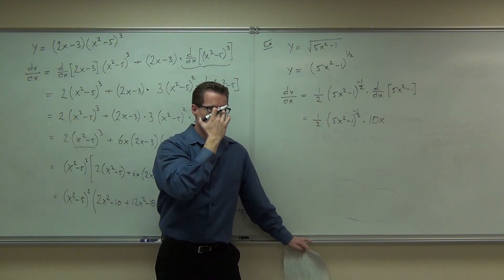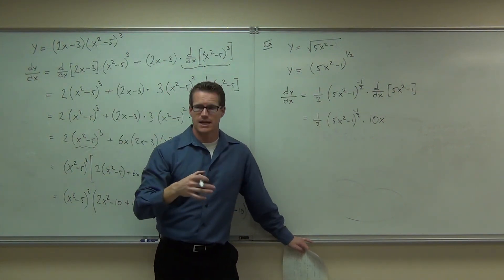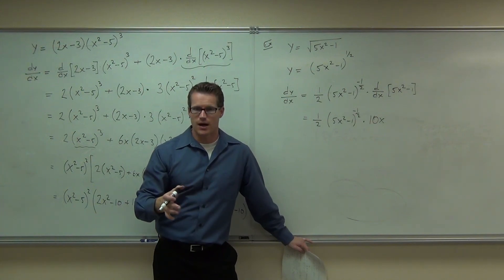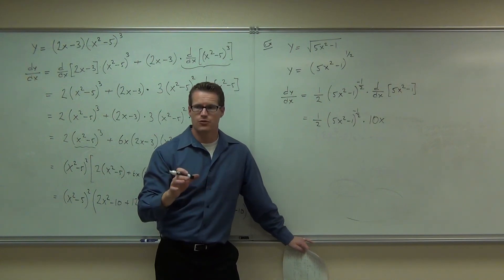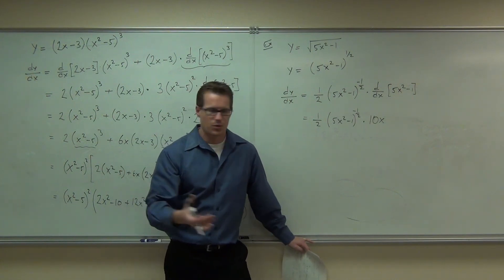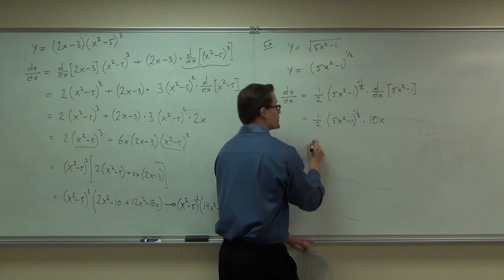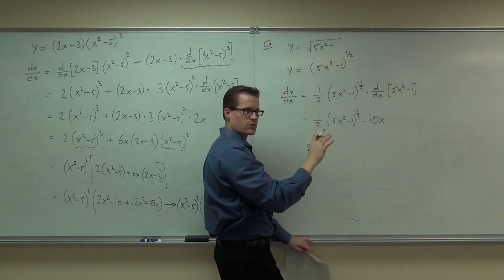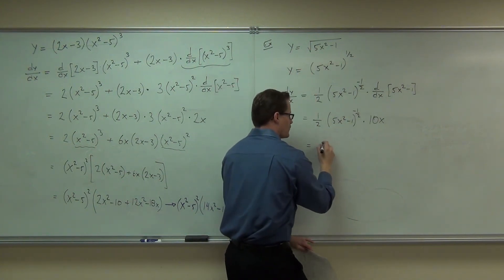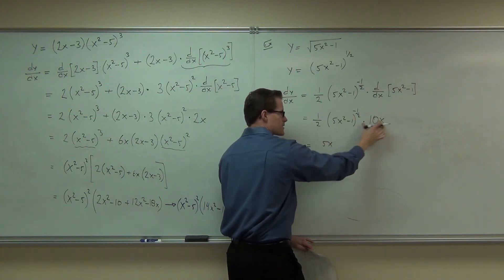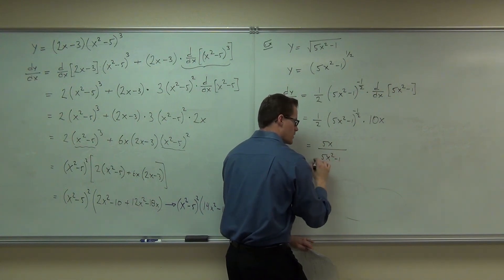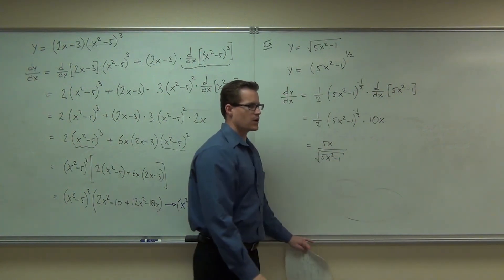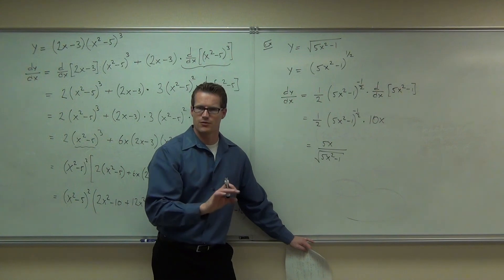Now, make it a little prettier. Here's how you can make it a little prettier. The 1 half and the 10, that simplifies. That simplifies and gives you 5. So we have 5x, and then we have this 5x squared minus 1 to the negative 1 half. How you can write that appropriately would be, since you started as a square root, you probably want to end with some sort of root. We want 5x on the numerator, 5x squared minus 1, and a square root on the denominator. Do you see why it's on the denominator firstly? It's a negative 1 half that moves to the denominator.